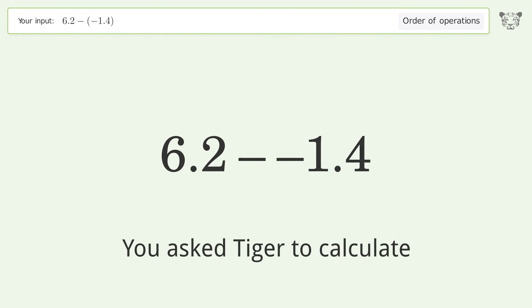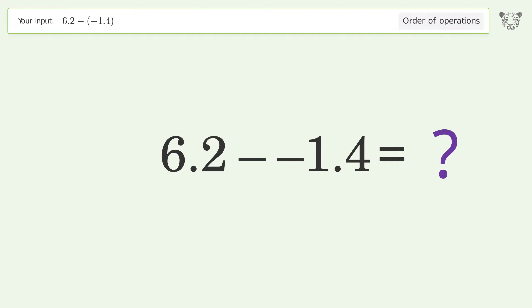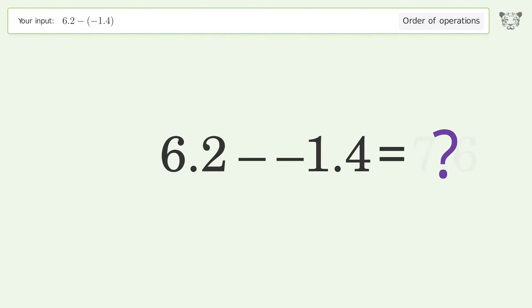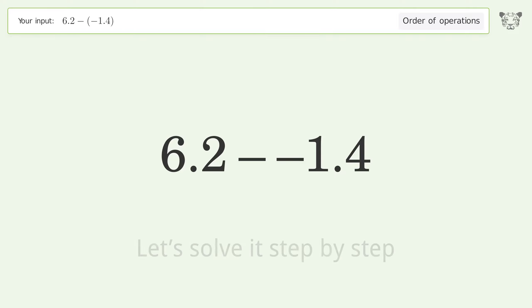You asked Tiger to calculate this. It deals with the order of operations. The final result is 7.6. Let's solve it step by step.